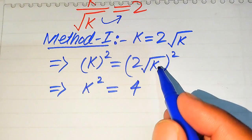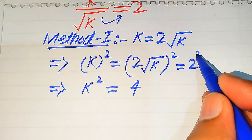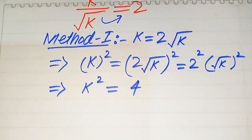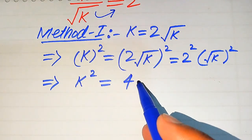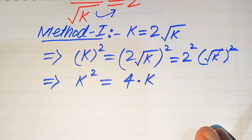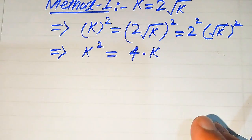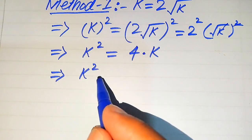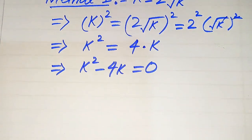In the next step, we apply the square separately: 2 squared becomes 4, and the square root and the square cancel, leaving k. So we get k squared equals 4 times k. We then move 4k to the left hand side, giving us k squared minus 4k equals 0.